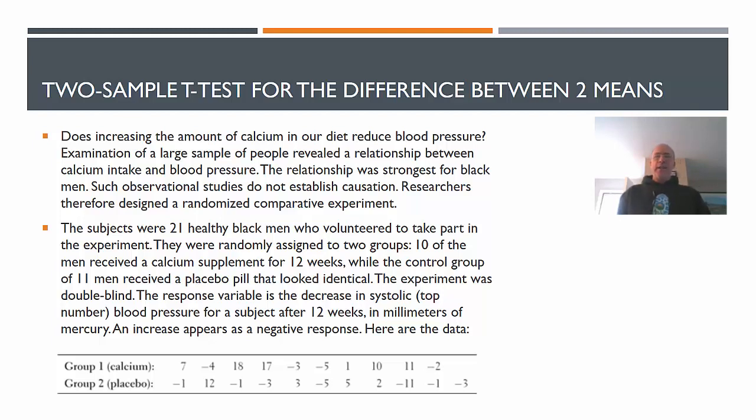The response variable is the decrease in systolic blood pressure for a subject after 12 weeks, in millimeters of mercury. An increase appears as a negative response. And we have the data given here. Keep in mind that we're looking for positive values. Positive values mean there was a decrease. We see the numbers for the calcium group and for the placebo group.